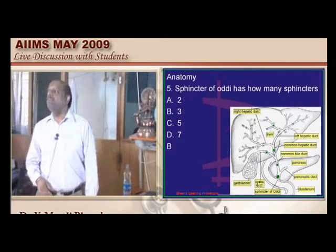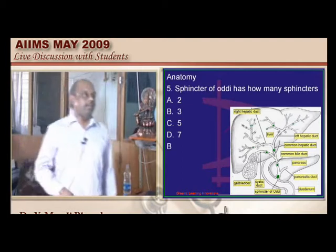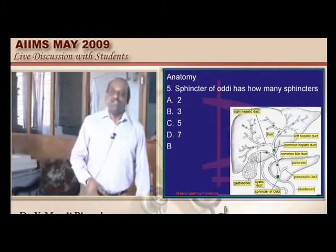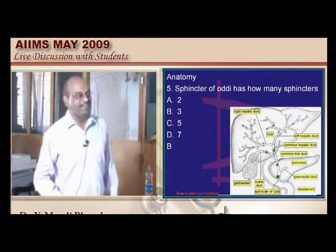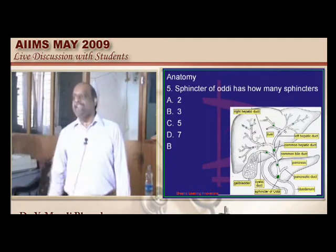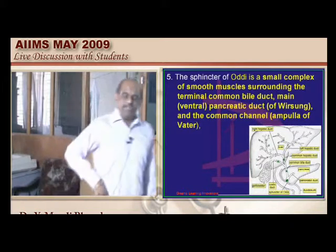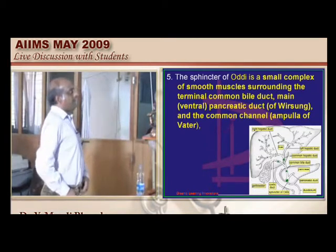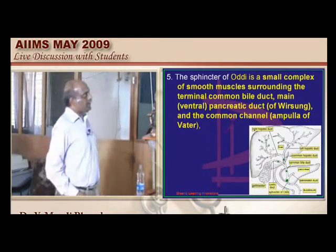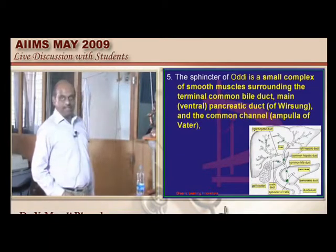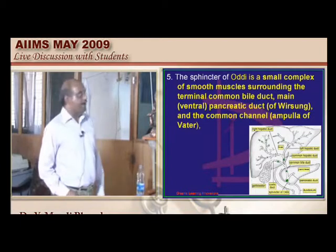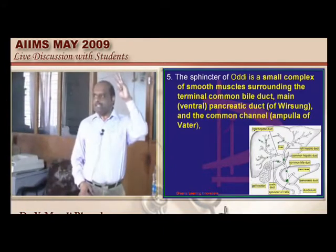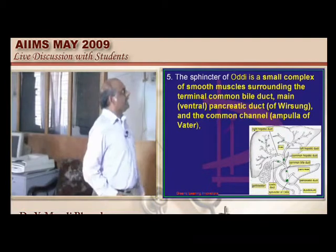The sphincter of Oddi has how many sphincters? You must be very sure on small nitty-gritties in entrance exams. The sphincter of Oddi has got three sphincters. The reason is it is a small complex of smooth muscles surrounding the terminal common bile duct, the main pancreatic duct of Wirsung, and the common channel — the ampulla of Vater. That is why it is a complex of smooth muscles forming three sphincters.